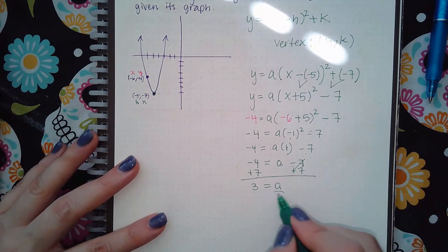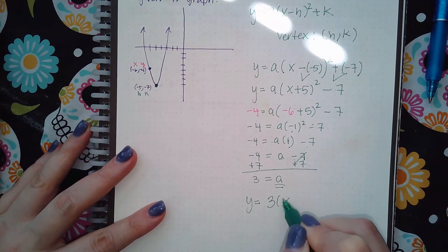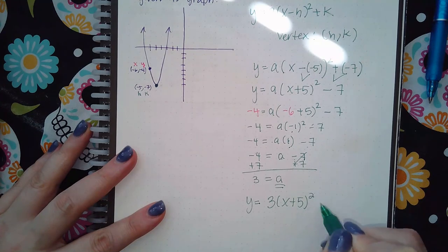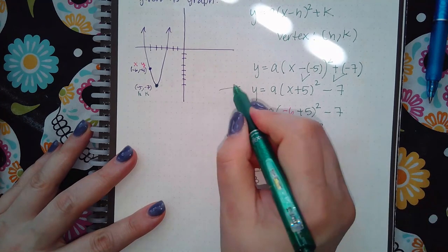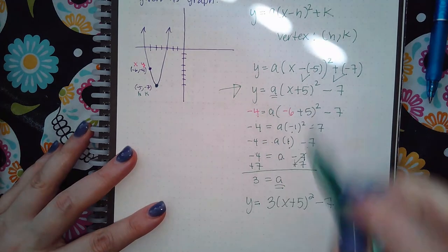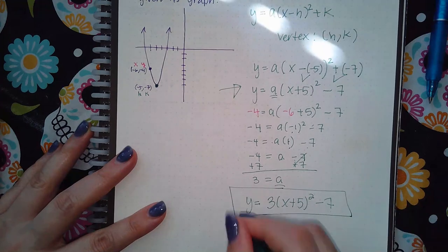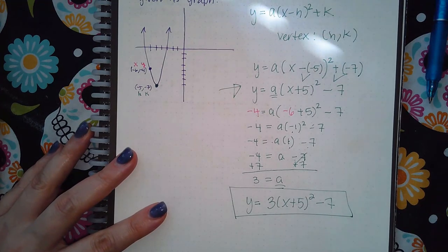But now that I know what a is, my equation is going to be y equals that a value, and then the x plus 5 squared minus 7. So this was almost the answer. I just needed to figure out the a, and now I have it. So I just plugged it in, and this is the equation to that parabola.